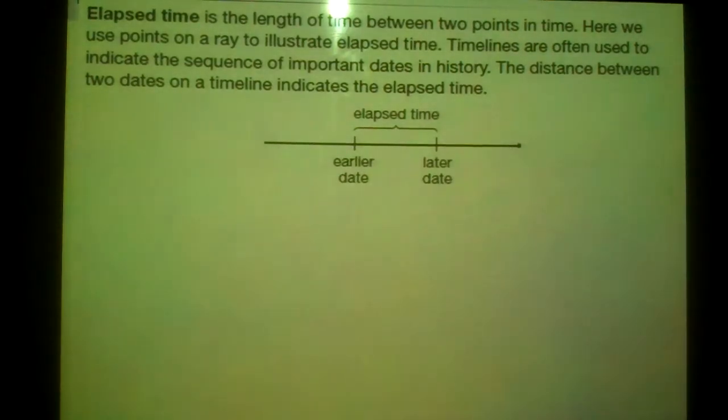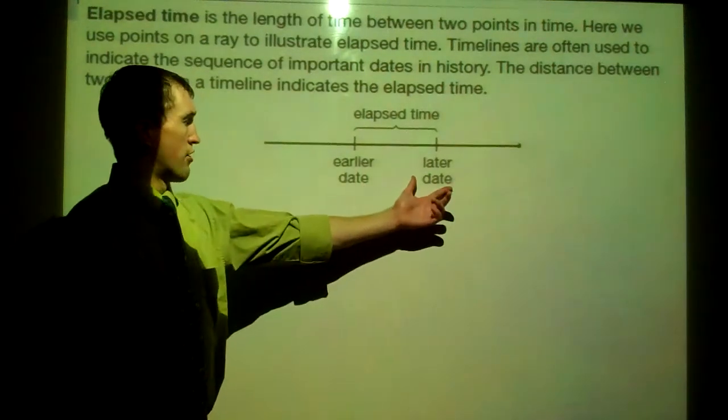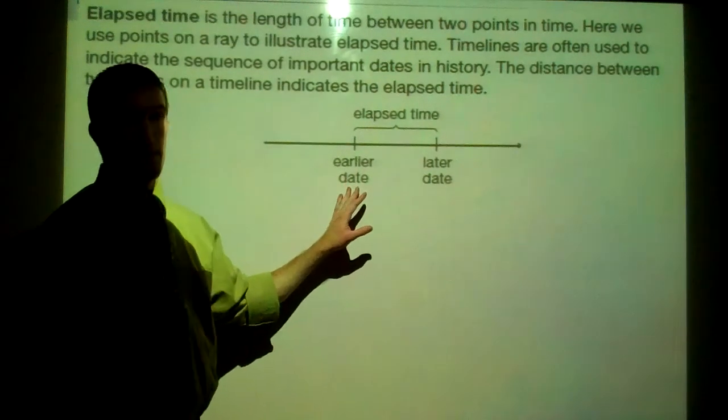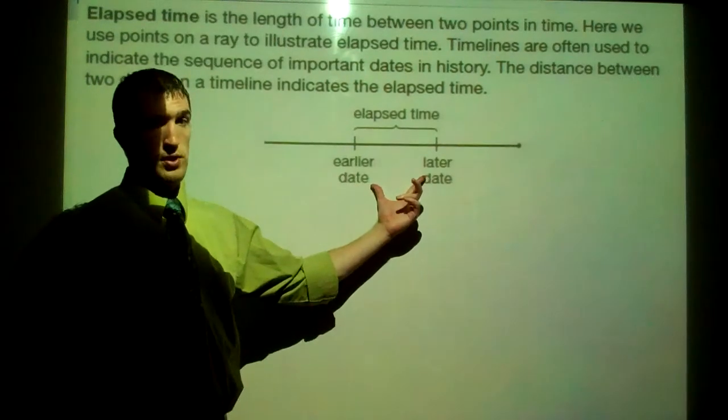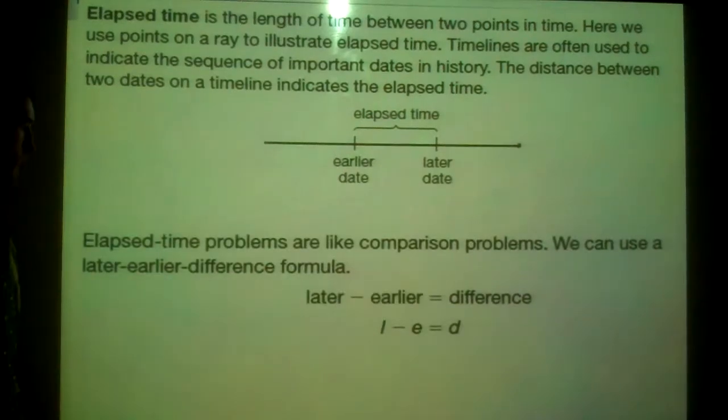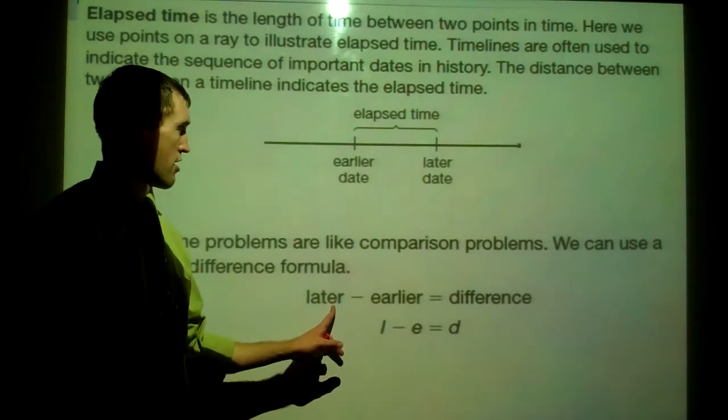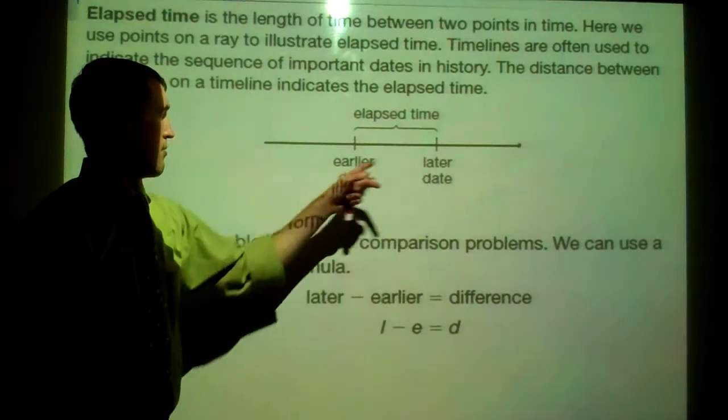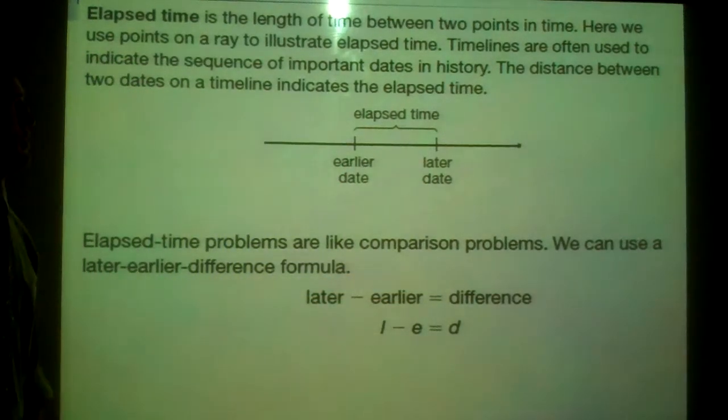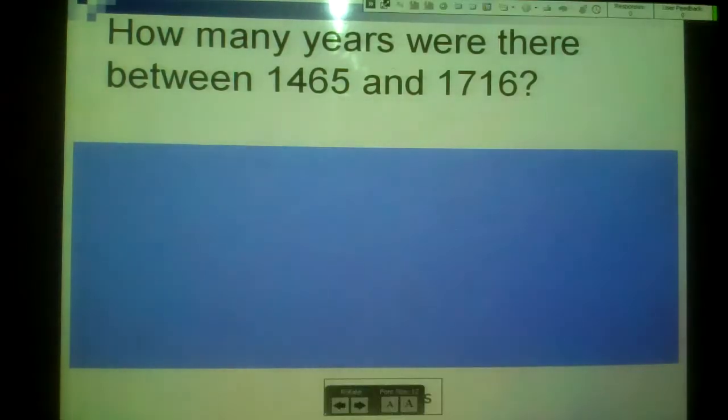Elapsed time. Elapsed time is the length of time between two points of time. Here we use points on a rate to illustrate what elapsed time is. Here's an earlier date. Here's a later date. Maybe 2011 right here. 1995. If we subtract these two dates, we should get the amount of time that passed between those two. Just like this. Take your later, minus your earlier, later, minus earlier. You get the difference or the amount of time that passed.